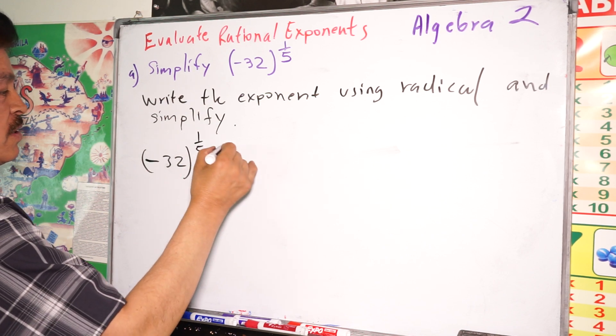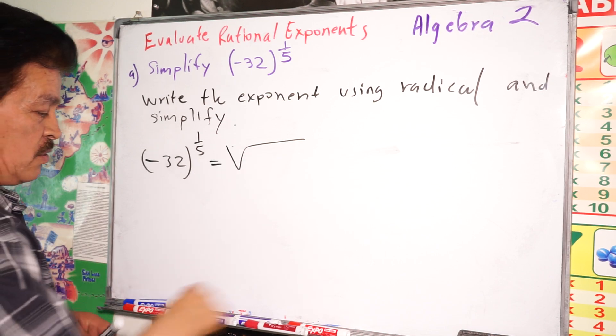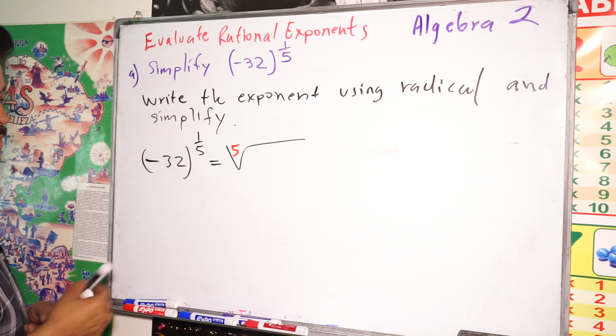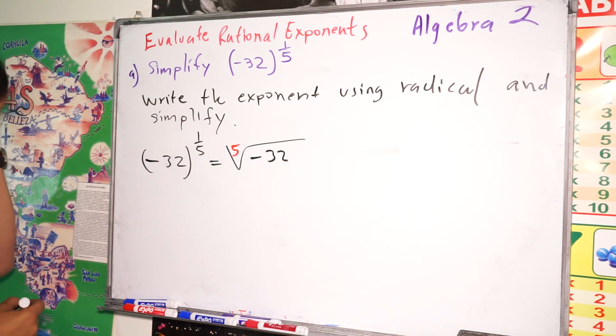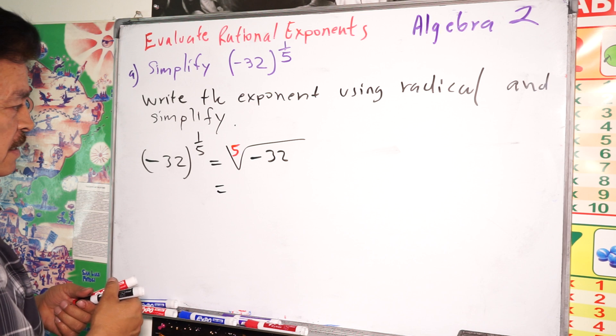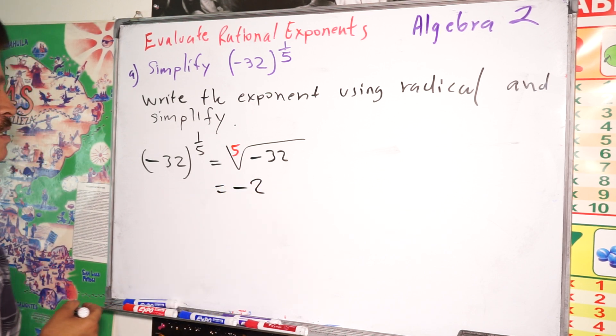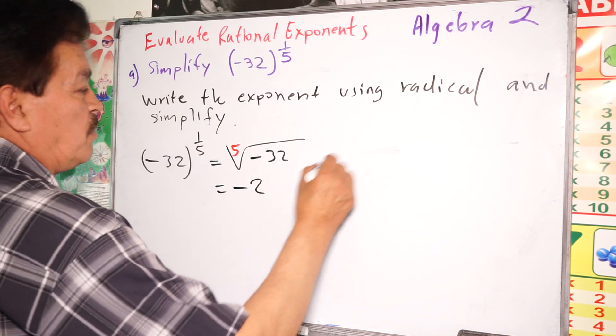So it equals, let's use another color, the 5th root of -32. So this is, since it's 1, just simplify. So the answer is -2. It's our answer, okay. It's the solution for this problem.